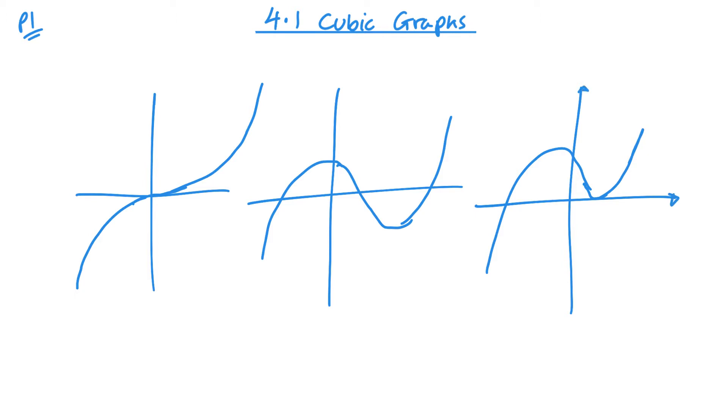So those are the three main ones for positive. And then if we were looking at negative x cubed, so negative cubics, then we'd be looking at kind of going the other way. They would be the same, just looking at the reverse.